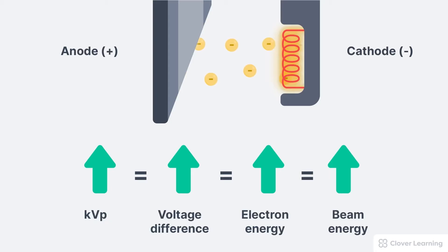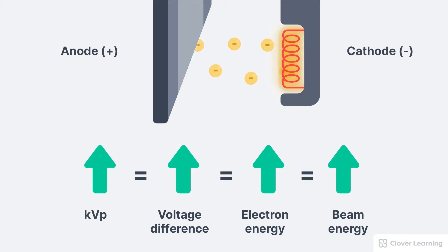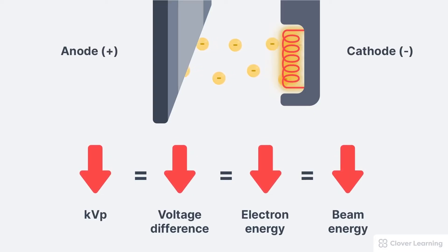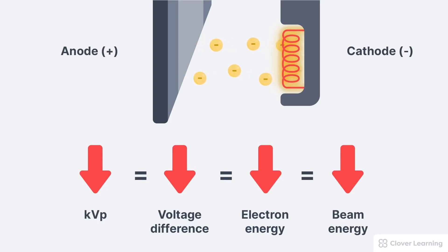When we increase the KVP, this creates a larger voltage difference across the x-ray tube. This causes the electrons to move more quickly, which gives them more energy and produces a higher energy x-ray beam. When we decrease the KVP, this creates a smaller voltage difference across the tube, so the electrons move more slowly through the x-ray tube and the x-ray beam has less energy.